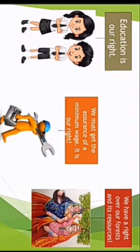In the third picture, we can see Adivasi women, or tribal women. They are saying that we have a right over our forest and its resources. As the Adivasi people live in forest, they have a right to collect all the resources available from the forest for their livelihood. In the above pictures, you have constantly heard the word 'right'.